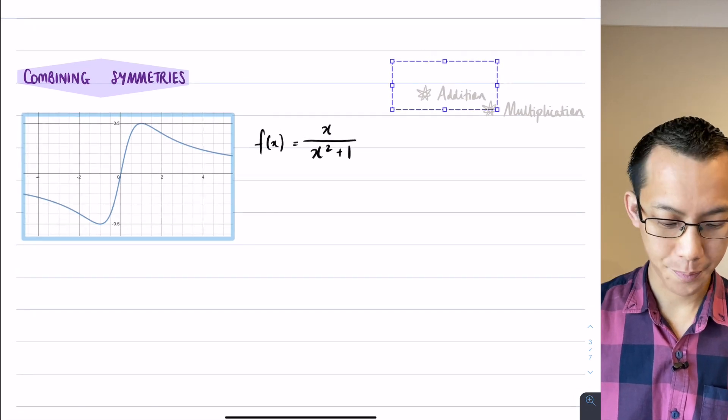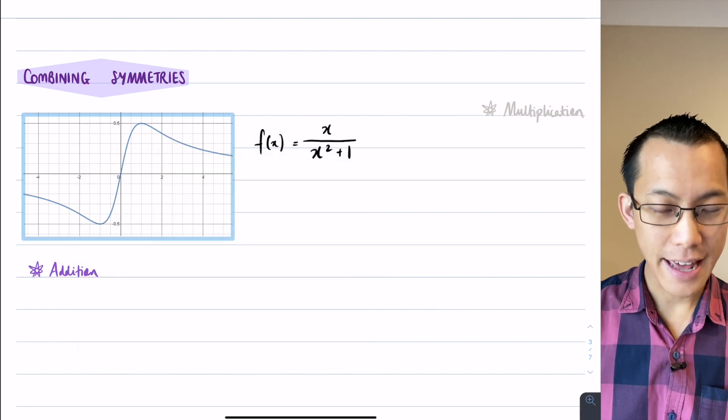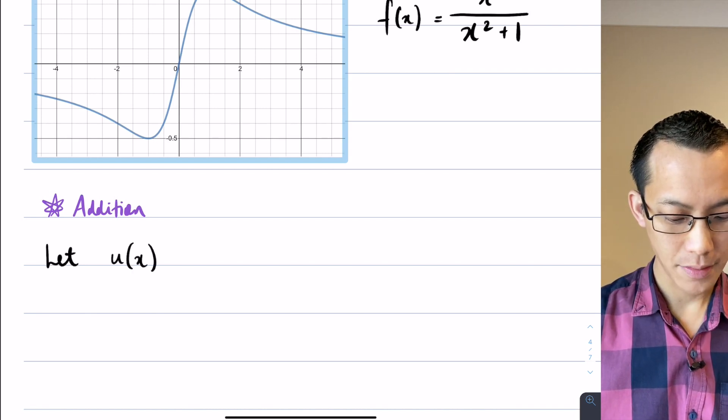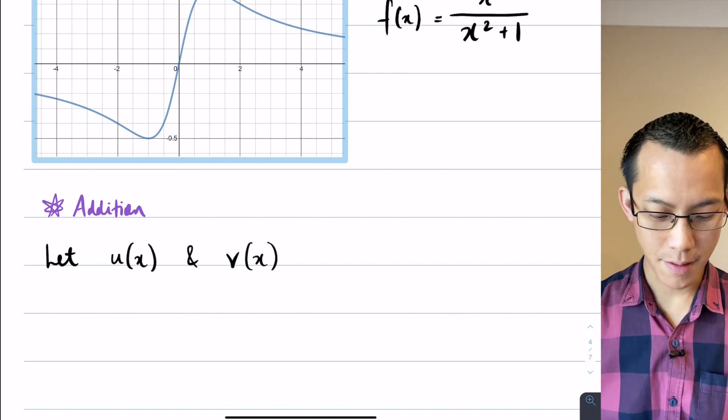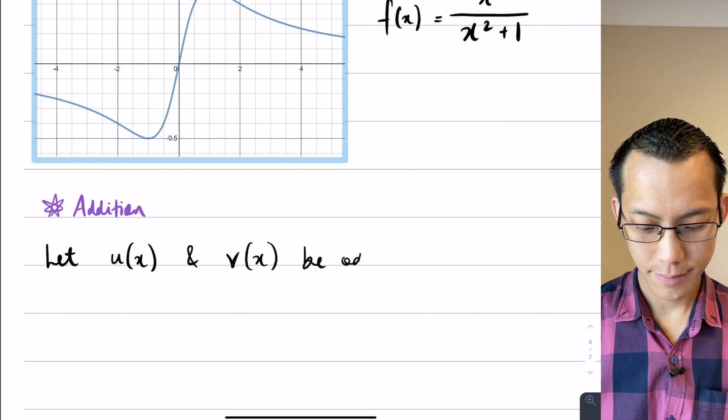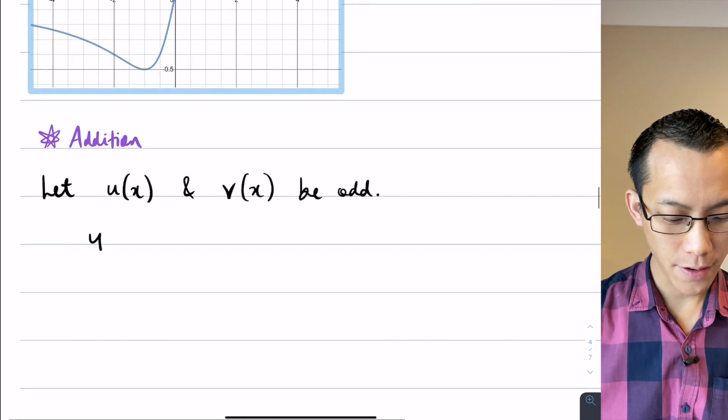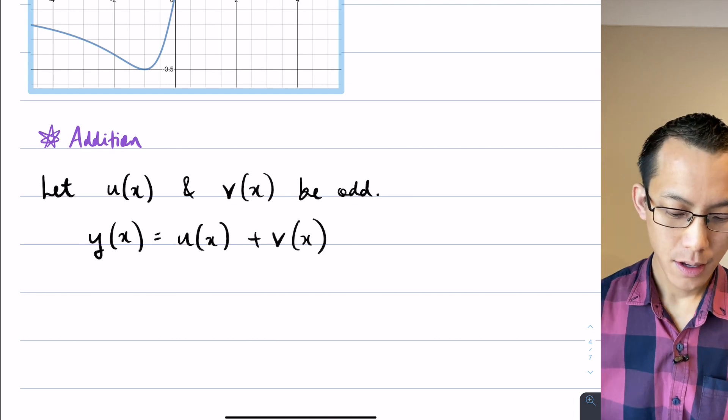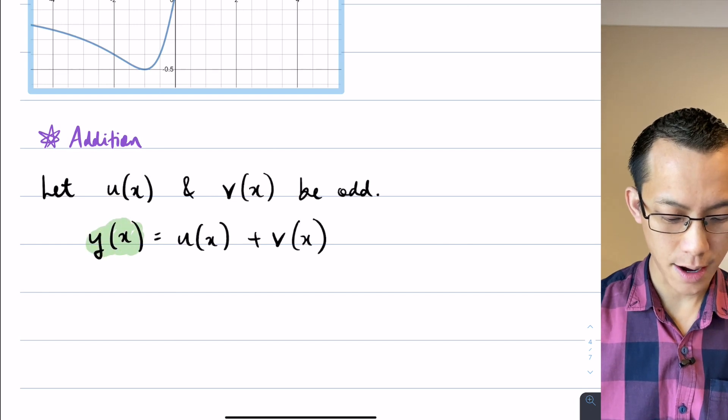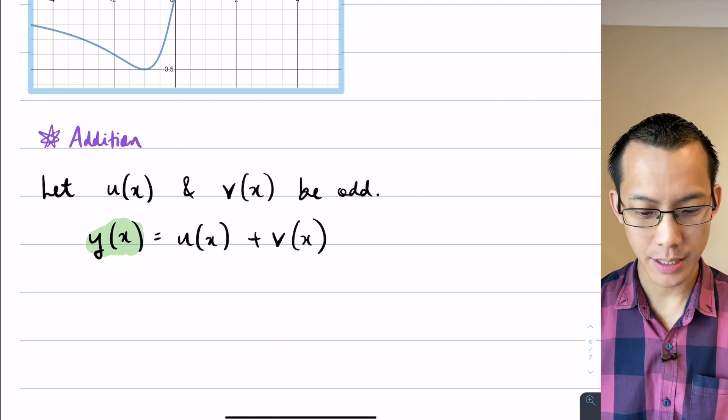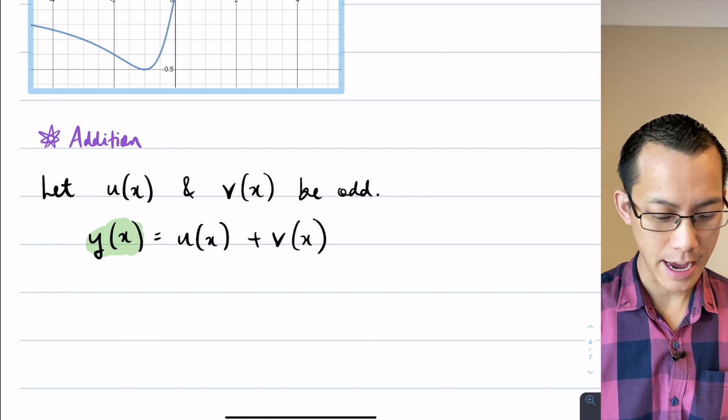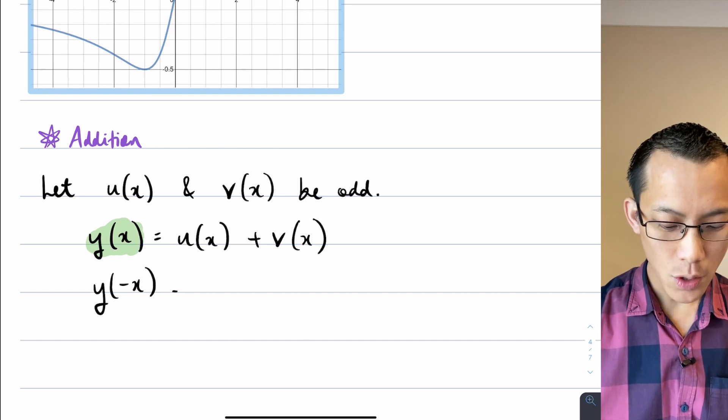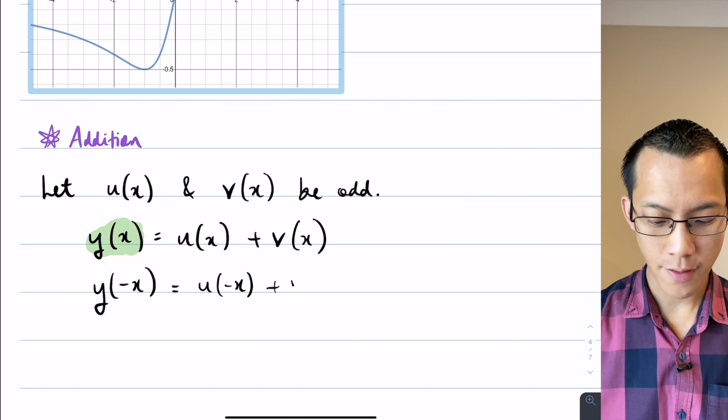So let's start with what happens if you are adding two functions together. Let's suppose we'll let two functions, let's call them u and v, let's suppose both of them are odd. So if you have two odd functions and you have some new function which is made up of adding those two functions together, so u of x plus v of x. What do we know about this new function over here if we know that the two components were odd? What can we say about this? Well let's just test it out and see what happens. If I say what happens when I put in negative x into here, that's how I can test anything to do with symmetry.